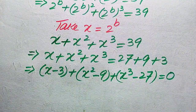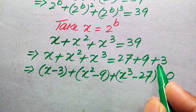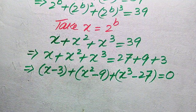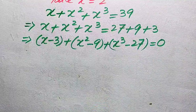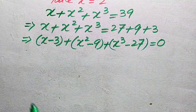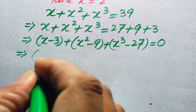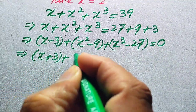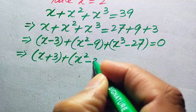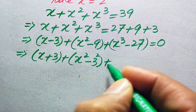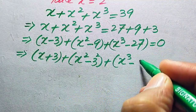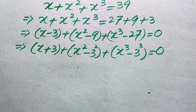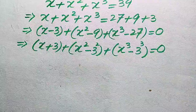This whole equation equals zero, because when we move the values to the left-hand side they become negative. We rewrite the equation as: x minus 3, plus x squared minus 3 squared, plus x cubed minus 3 cubed, equals zero.